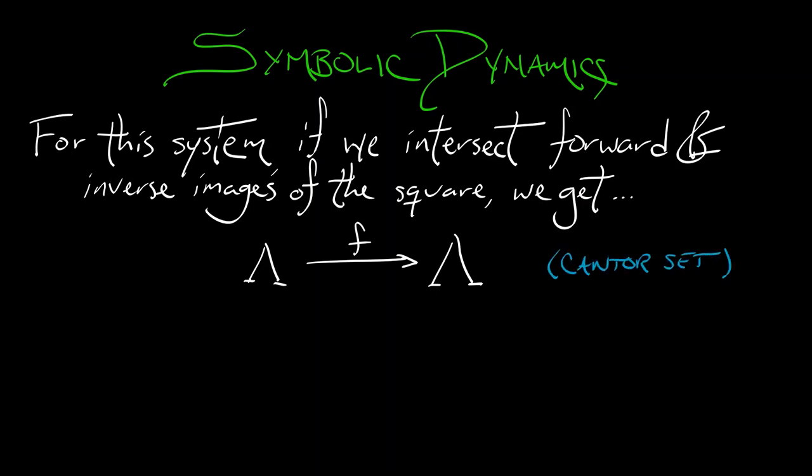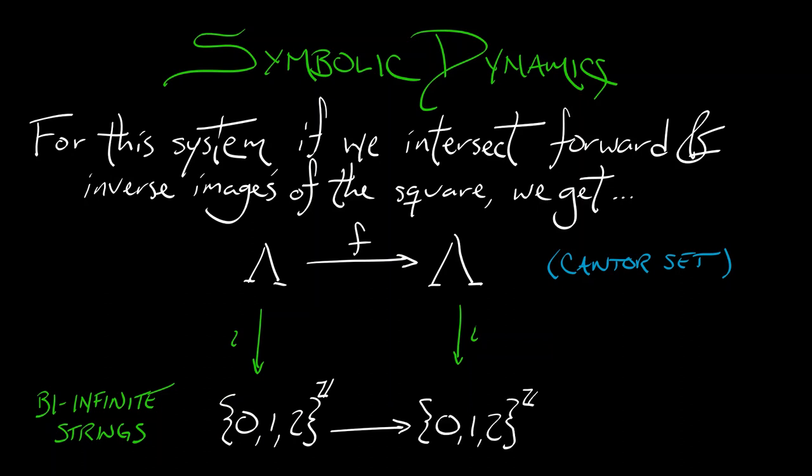That set is going to be a Cantor set. It's just going to look like dust. But what we can do is assign itineraries to points based on which strip they're in as a function of time. That itinerary is going to, again, be a bi-infinite string, but in three symbols: 0, 1, and 2, corresponding to those three horizontal strips. The shift map is going to act on this space of bi-infinite strings, and we're going to get a topological conjugacy to the action of the map on the invariant set. This is called a full shift on three symbols, as opposed to the full shift on two symbols for the horseshoe map.